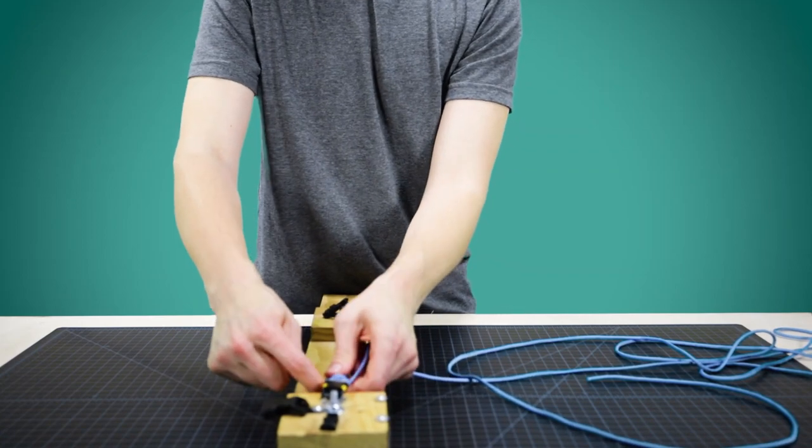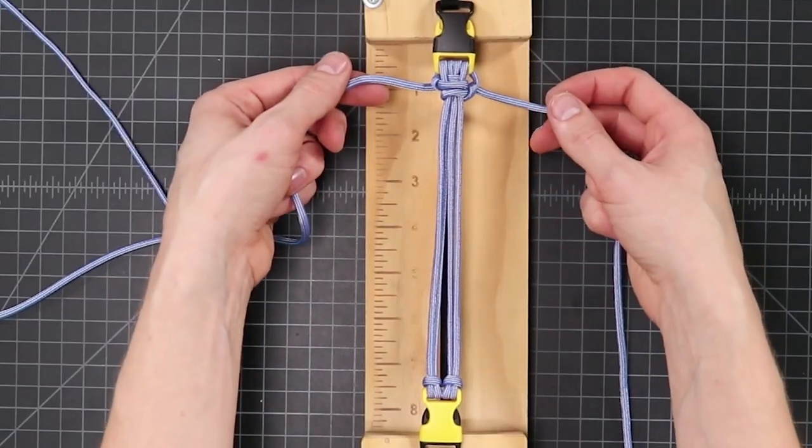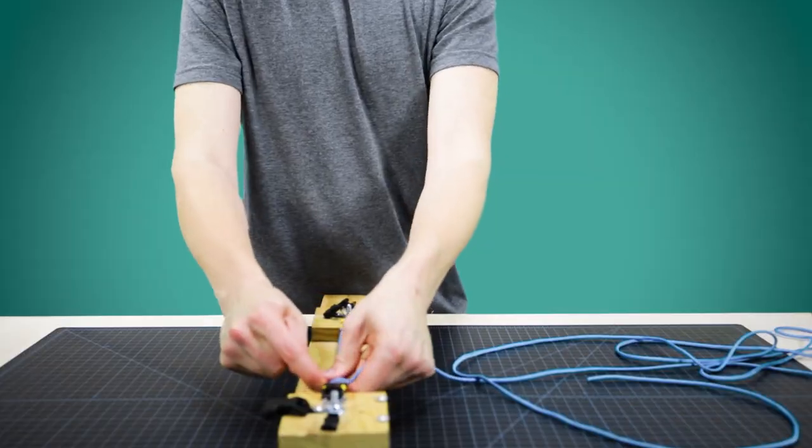This is just to hold everything in place, and to get our cords where we want them launching into the full weave. Alright, now that we have that done, now back to our left side.